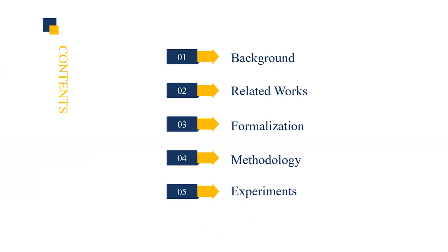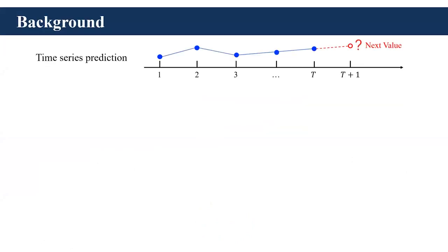First, let me introduce the background. Temporal data are valuable in reality, and we can divide temporal data into three categories, including time series, temporal events, and temporal sets. Time series is the simplest form of temporal data, which is composed of a sequence of numerical values with time steps. Time series prediction aims to predict the next value of the sequence.